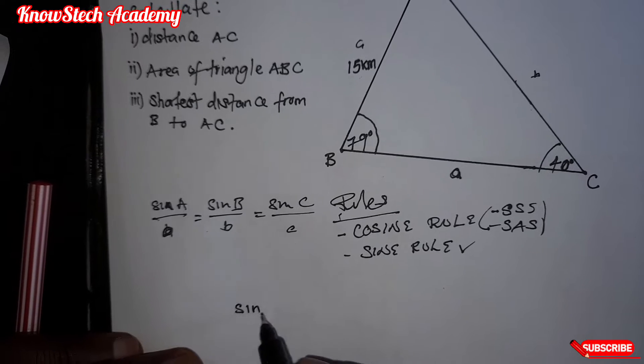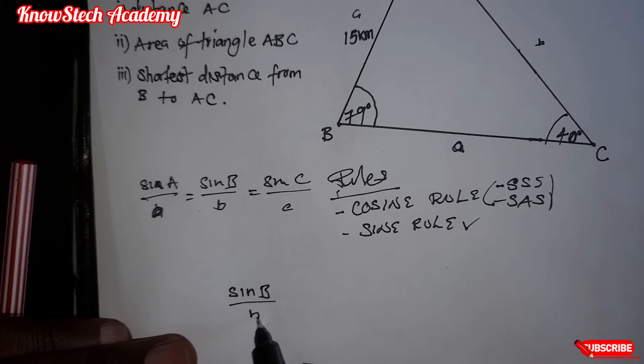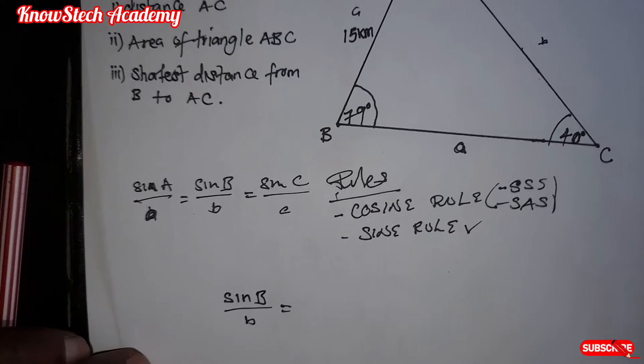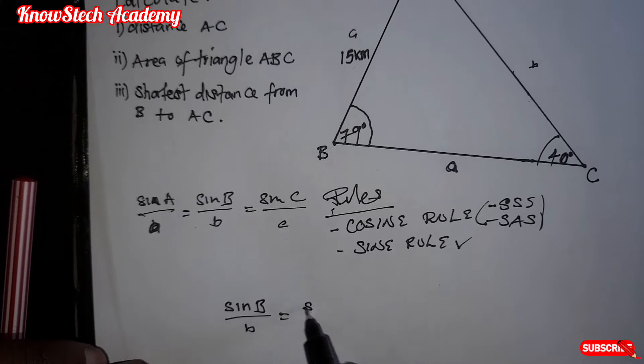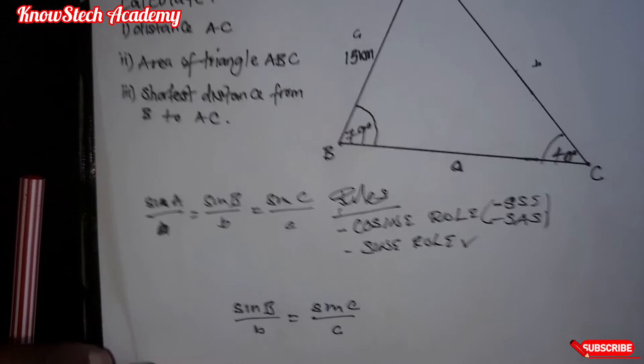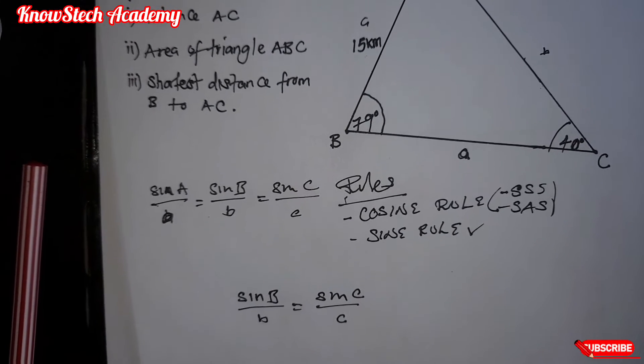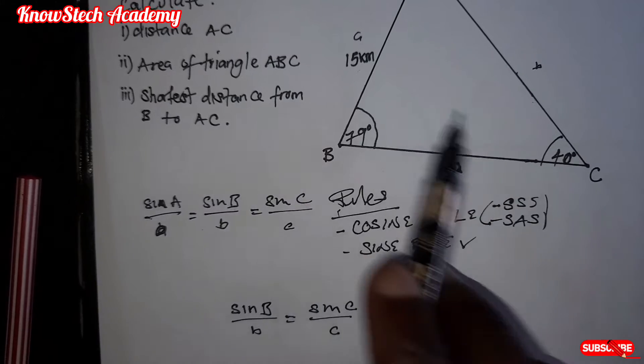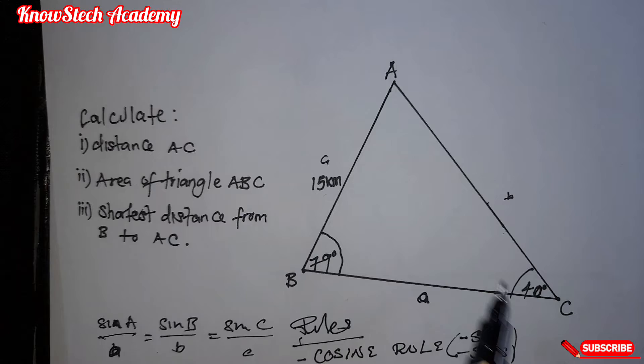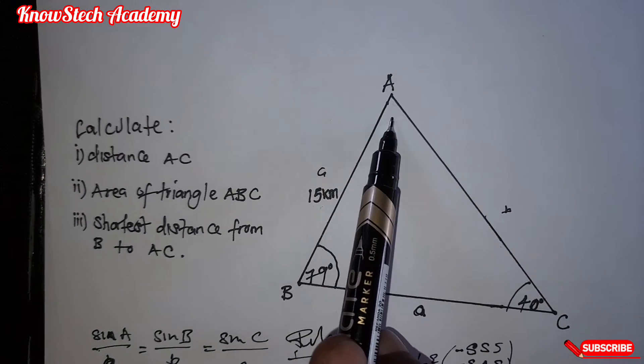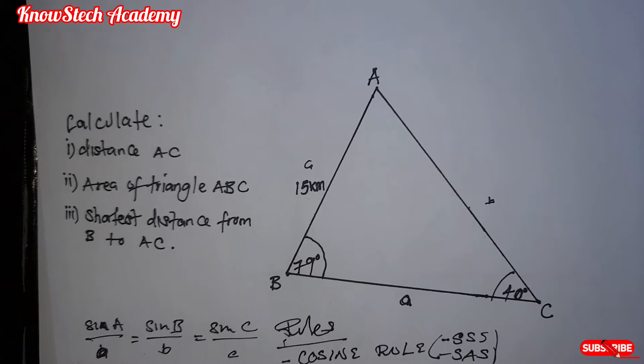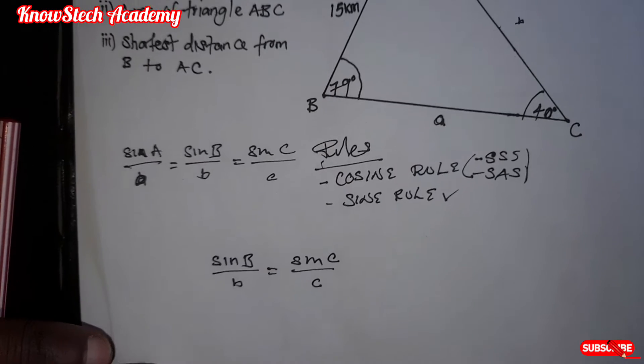So the formula will be, since we are finding this one, it will be sine B over small letter b, which is equal to sine C over small letter c. Why have we used the C? Because we have a side and its corresponding angle here. We can't use this one because we don't have a side.